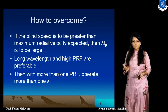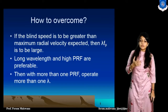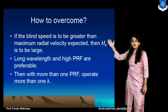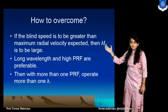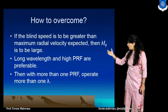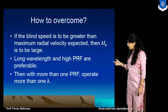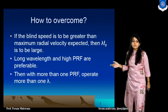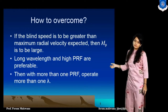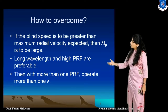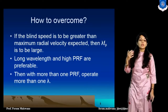So, how to overcome this limitation? First, if the blind speed is greater than or equal to the maximum radial velocity that is expected, then the product of wavelength and the pulse repetition frequency is too large. Second, we can also increase the wavelength and also increase the pulse repetition frequency. Third, we can use more than one PRF because we are going to operate it on more than one wavelength.